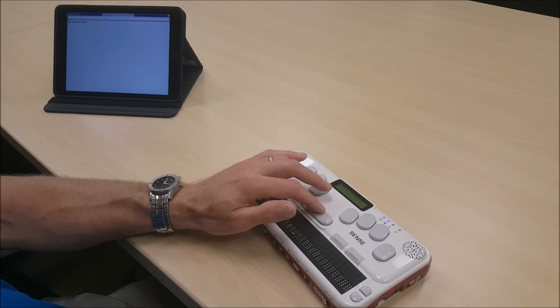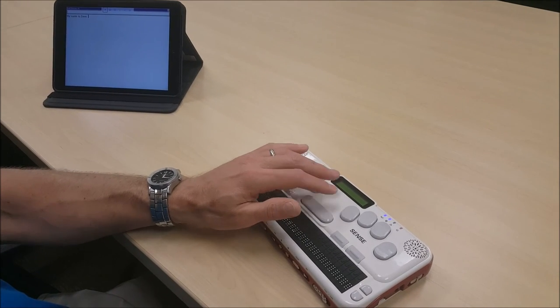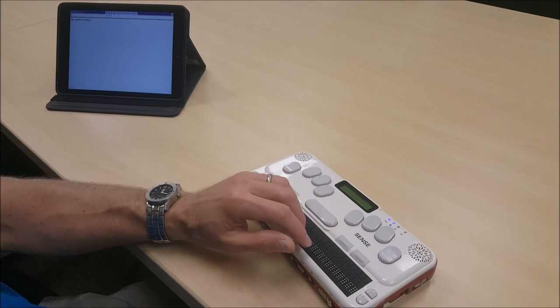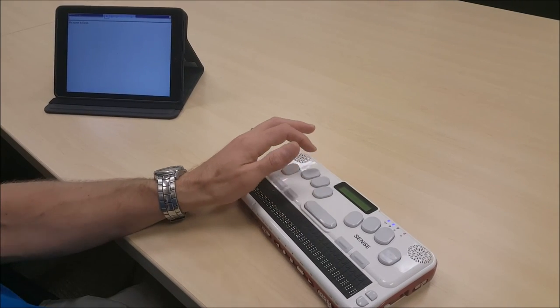One more example to do is say line. I could press space, dots 1, 4, followed by space. My name is Dave. And now I know that my name is Dave.